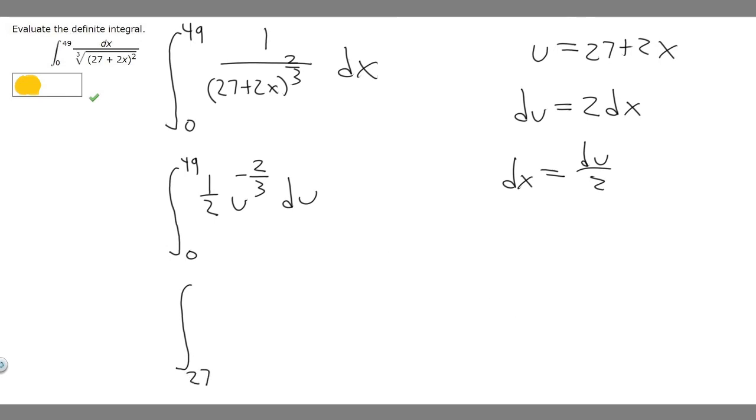Then let's do the upper bound. So it's going to be 27 plus 2 times 49. If we do 2 times 49, it's going to be 98. So it's going to be 27 plus 98, which is 125. So now we've got the upper bound - 125.